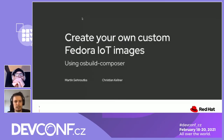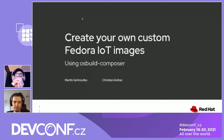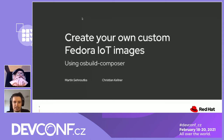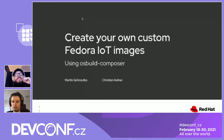As you probably know, Fedora IoT images are official Fedora images that use the OSTree technology. And OS Build Composer is a web service for building custom operating system artifacts. This means, for example, virtual machine images, but also OSTree commits.